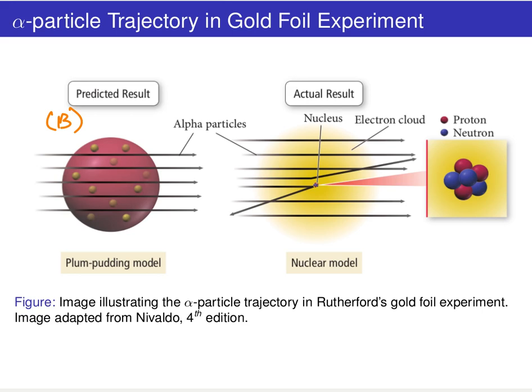If we had something like model B's undefined region of positive charge, there wouldn't be a localized region for the alpha particle to run into, get deflected by, or bounce off of. What must be happening is that there is a region in space where we have a bunch of really localized positive charges.